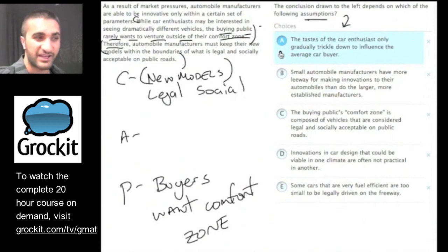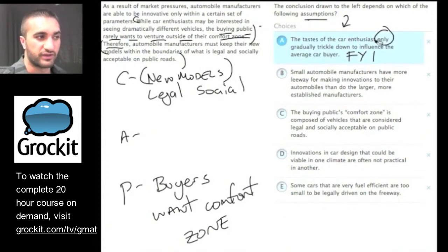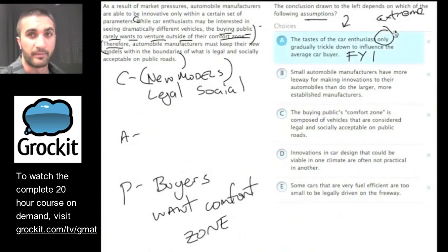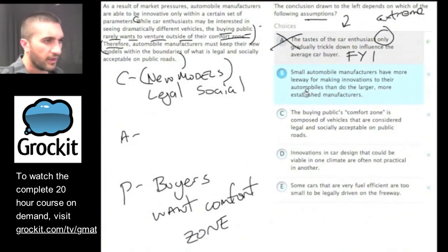Answer choice A: the tastes of the car enthusiast only gradually trickle down to influence the average car buyer. This is what I call an 'FYI' answer choice — it doesn't have to be true for the argument to make sense. Also, 'only gradually' is extreme language. We should be conscious of extreme language in answer choices. Why must it be true that tastes only gradually trickle down? We can eliminate A.